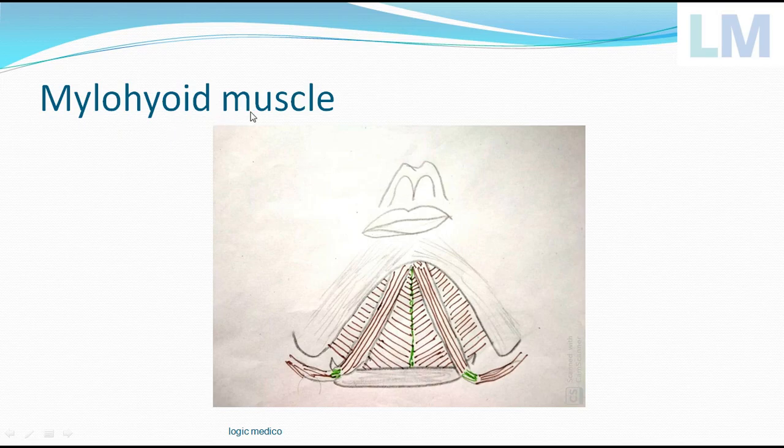Therefore, the Mylohyoid can also be called as oral diaphragm. Diaphragm means partition. So it is partitioning the oral cavity from the exterior. That is Mylohyoid muscle.